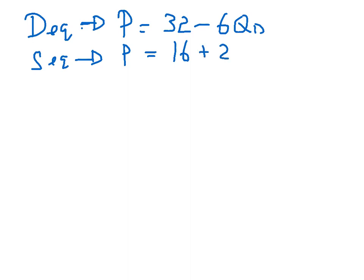If we give you a demand equation, we can say price equals 32 minus 6QD. And a supply equation, price equals 16 plus 2QS. Notice demand equation, negative sign. Supply equation, positive sign always.